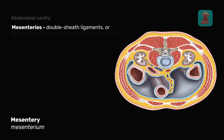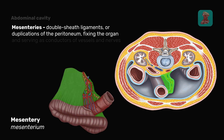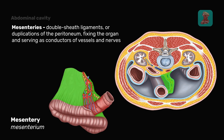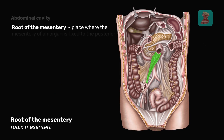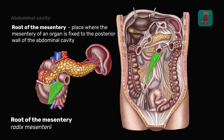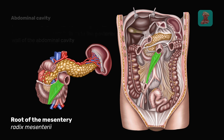Mesenteries are double sheath ligaments or duplications of the peritoneum, fixing the organ and serving as conductors of vessels and nerves. One should remember that the organ with the mesentery is always located intraperitoneally. The root of the mesentery is the place where the mesentery of an organ is fixed to the posterior wall of the abdominal cavity. Let's take a closer look at where the roots of the mesenteries of various organs are located.